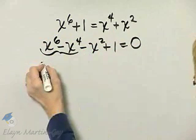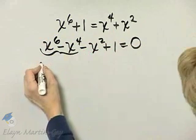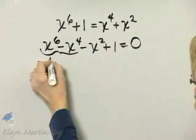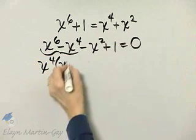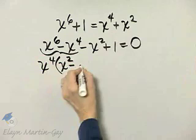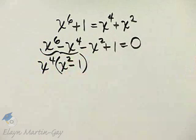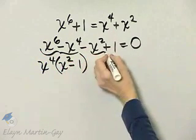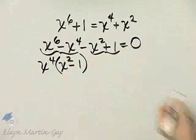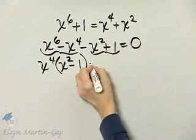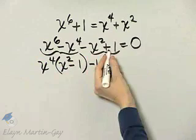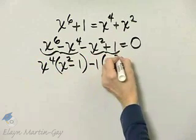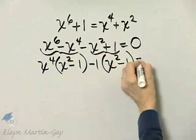In these two terms, I have a common factor of x to the 4th. If I factor it out, I have left x squared minus 1. What about in these two terms? Well, we see. I can factor out a negative 1, and if I do so, notice I'll have x squared minus 1 left. x squared minus 1.